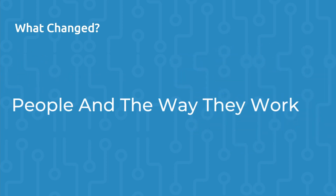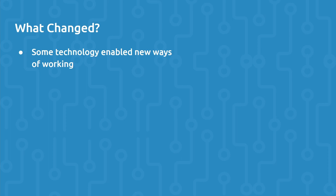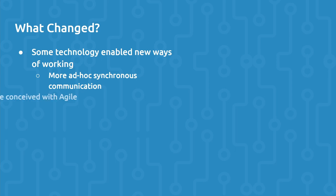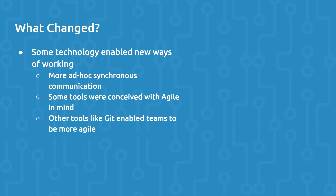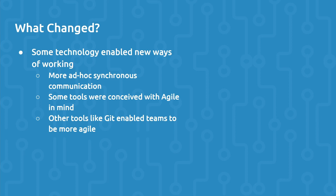Let's talk about how people and the way they worked changed over time, and the cultural philosophy that was developed. Some technological improvements enabled new ways of working, such as self-service cloud computing, collaborative SCM systems like GitHub, and even collaboration tools like Slack, Zoom, etc. These technical improvements triggered more synchronous ad hoc communication between people. Some tools might have been inspired by agile methodology, like pull requests in GitHub or Jira, while other tools like Git enabled teams to be more agile — Git provided benefits that encouraged an agile way of working.